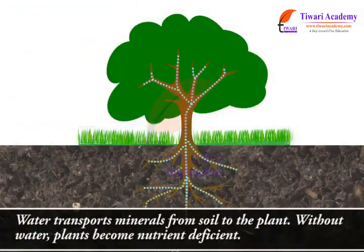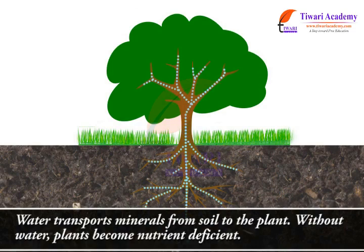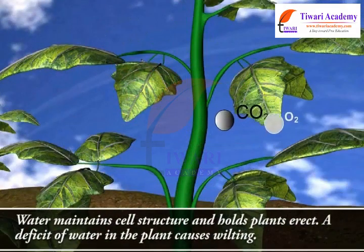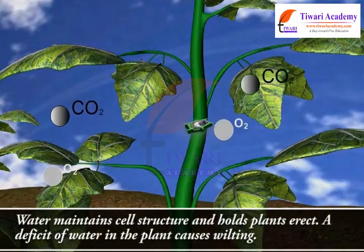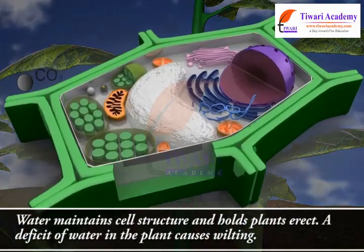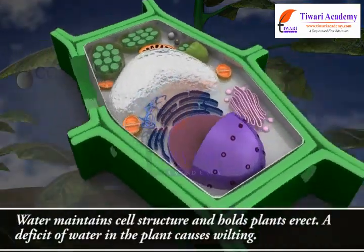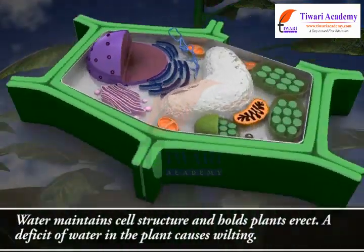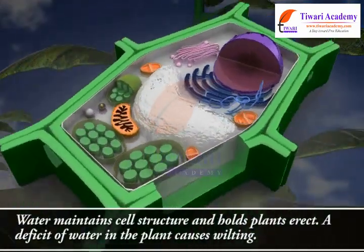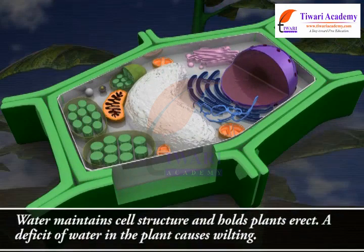Water transports minerals from soil to the plant. Without water, plants become nutrient deficient. Water also maintains cell structure and holds plants erect. A deficit of water in the plant causes wilting.